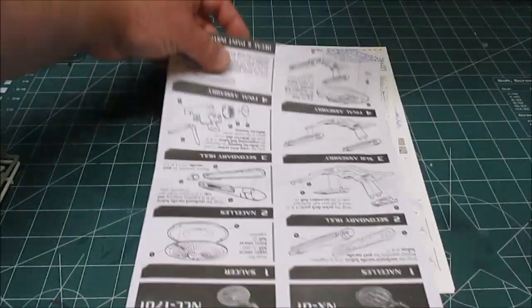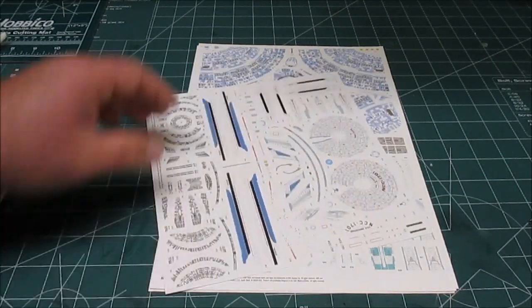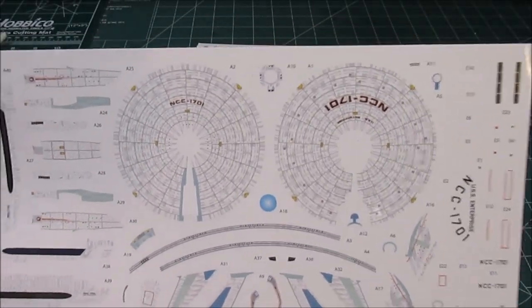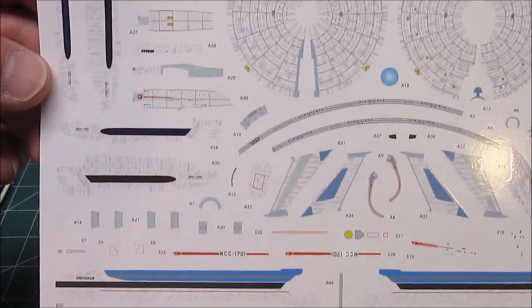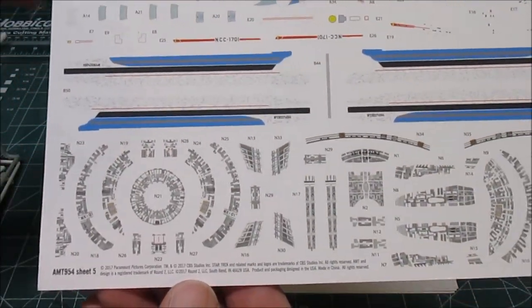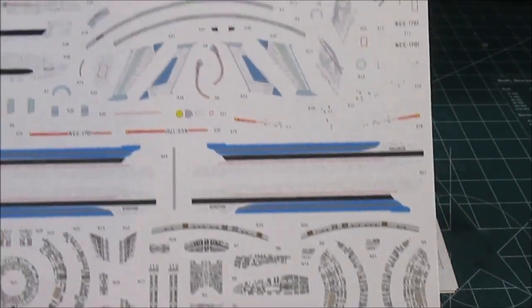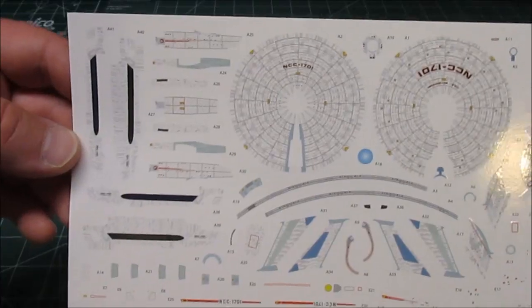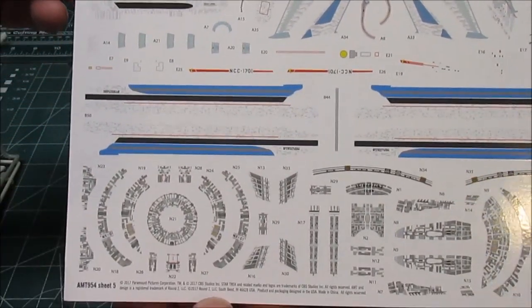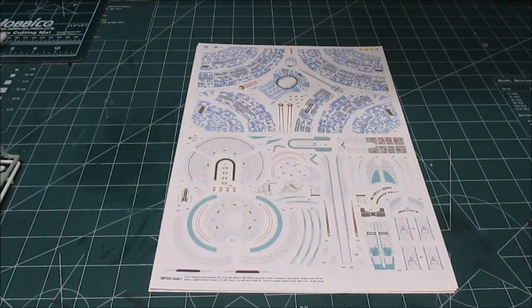Now getting to those decals - look at that stack, look at that stack of water slides right there. Check these out, absolutely gorgeous. And because I know you want to see them, we're going to go through every sheet. Just look at the detail on there, beautiful. Got the NX-01s, the refit, the original series, any Aztec as needed, panel lines - oh, delicious decals.